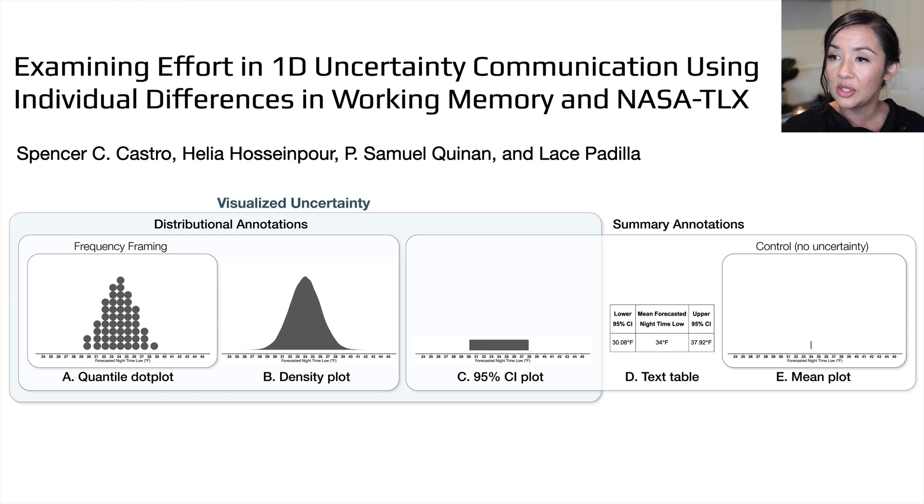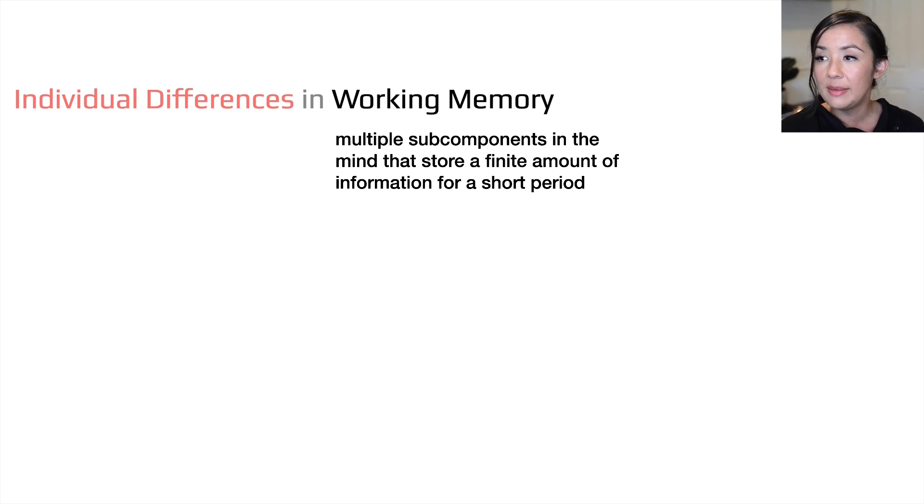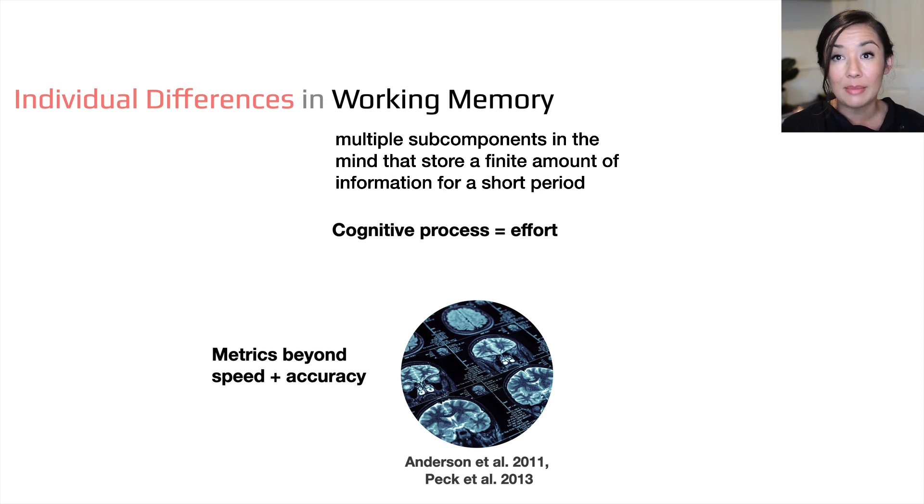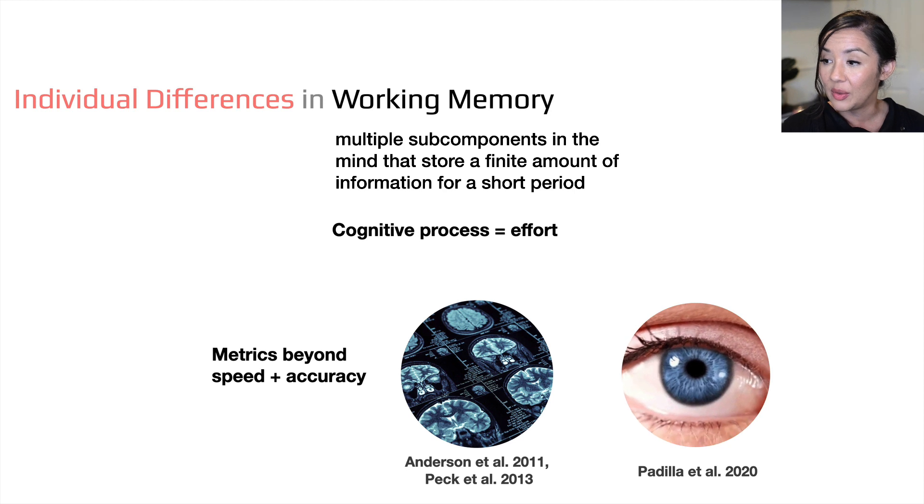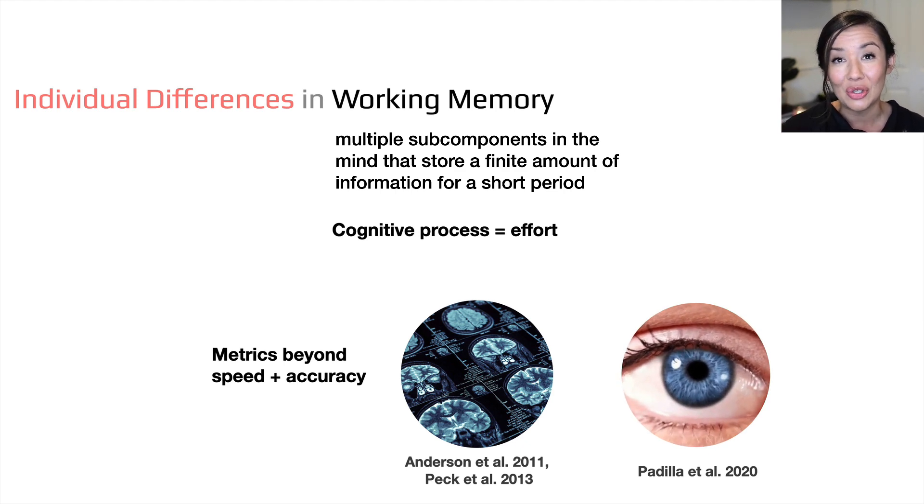The next part of our title is we're going to measure effort using individual differences in working memory. Working memory consists of multiple subcomponents in the mind that stores a finite amount of information for a short period of time. It's really the cognitive process that is responsible for effort. So this metric of working memory demand is very useful because we can measure it with things like neuroimaging that some visualization studies have done in the past. We can also measure it with pupillometry. These techniques are great, but they require machinery that you might not have access to. And what we wanted to do is find another way of evaluating working memory that you can do online.